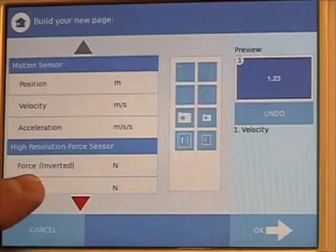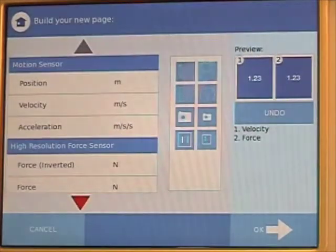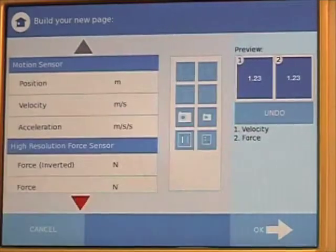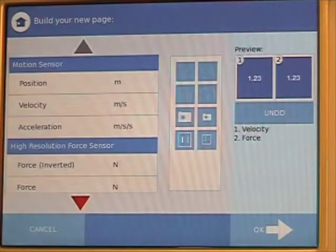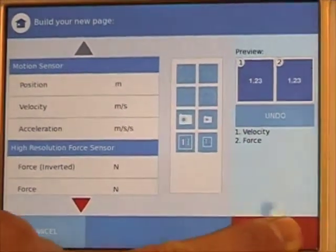We want the force, so I'm going to press force, and again I'm going to press the number icon. We now have listed on the right hand side both the velocity and the force shown in the number format. We press OK.